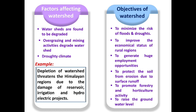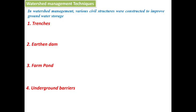The objectives of watershed management are: first, to minimize the risk of floods and droughts — by managing the watershed properly we can avoid both these natural disasters; second, to improve the economic status of rural regions; third, to manage the watershed for developmental activities and employment opportunities; fourth, to protect the soil from erosion due to surface runoff; fifth, to promote forestry and horticultural activity on all suitable land areas; and sixth, to raise the groundwater table.